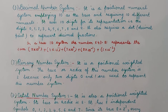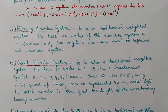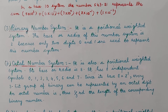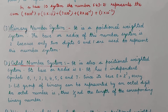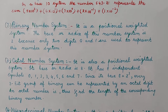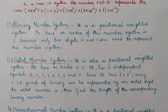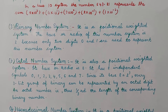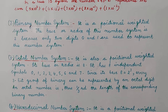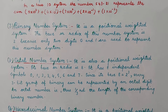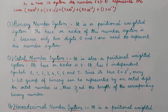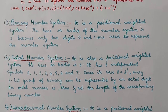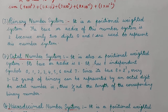The next number system is the octal number system. The word 'octal' means 8, so this number system uses 8 digits for its representation. The octal number system is also a positional weighted system and its base or radix is 8. It has 8 independent symbols: 0, 1, 2, 3, 4, 5, 6, and 7. Since 8 equals 2 to the power 3, every 3-bit group of binary can be represented by an octal digit, so an octal number is one-third the length of the corresponding binary number.